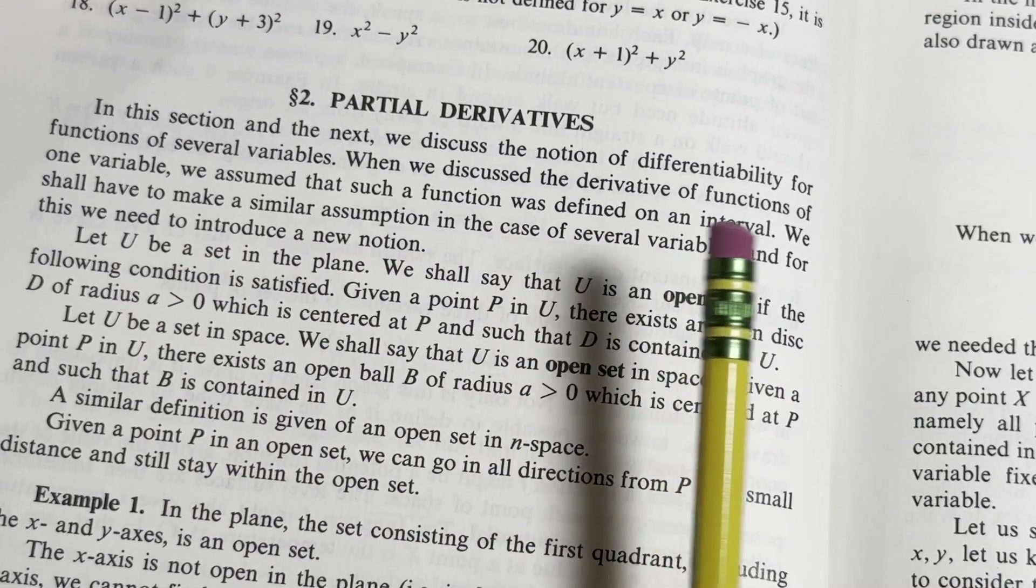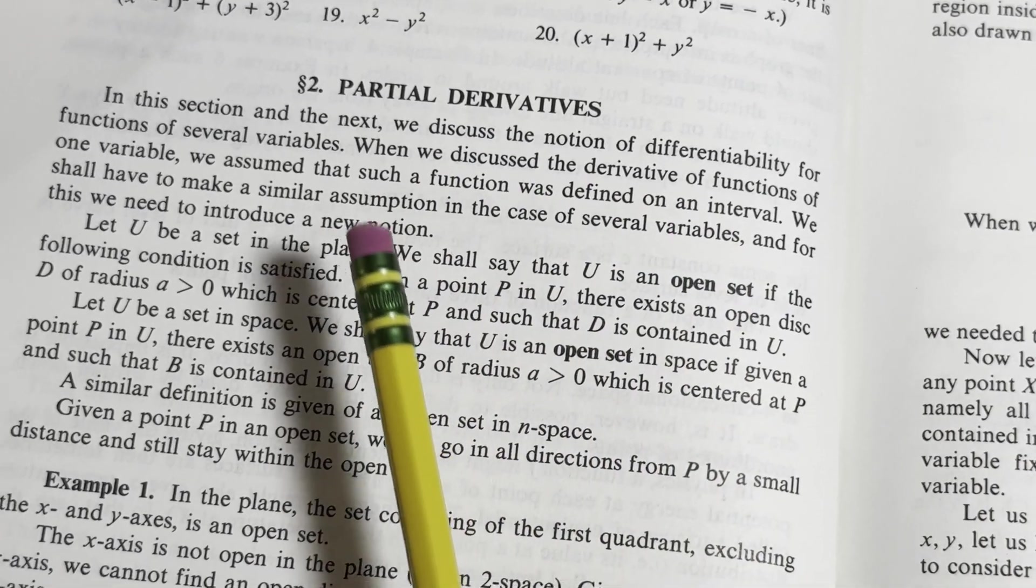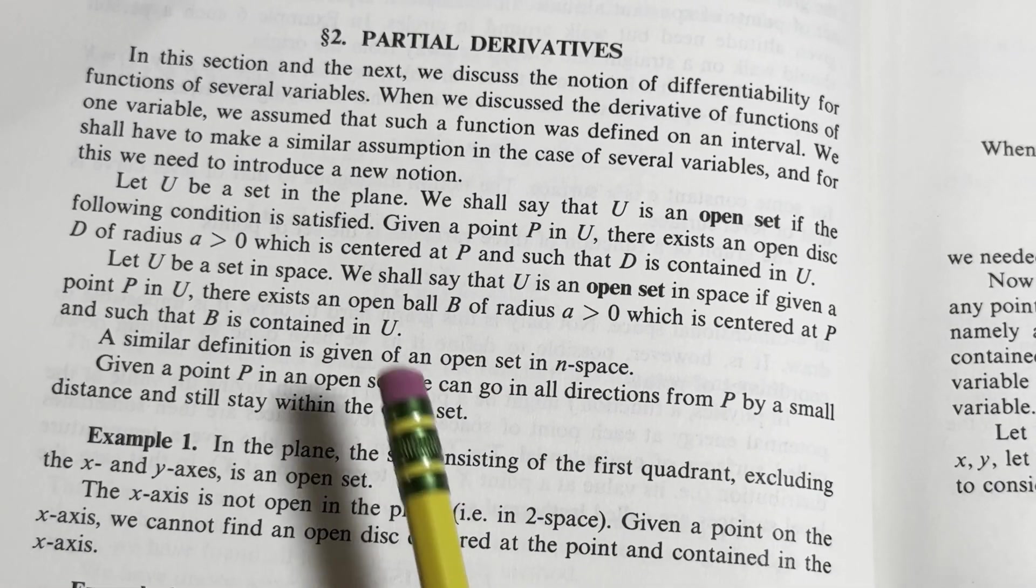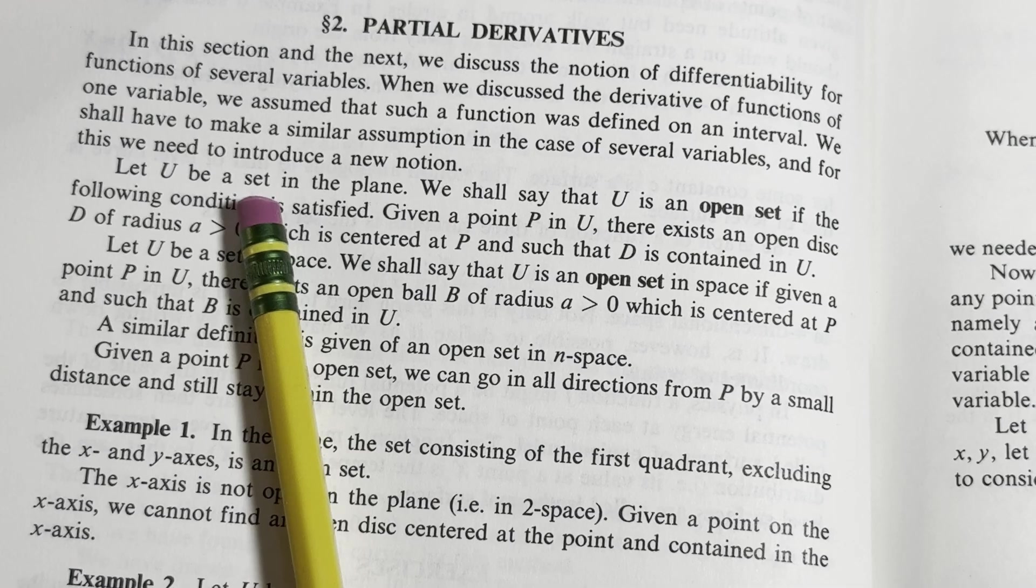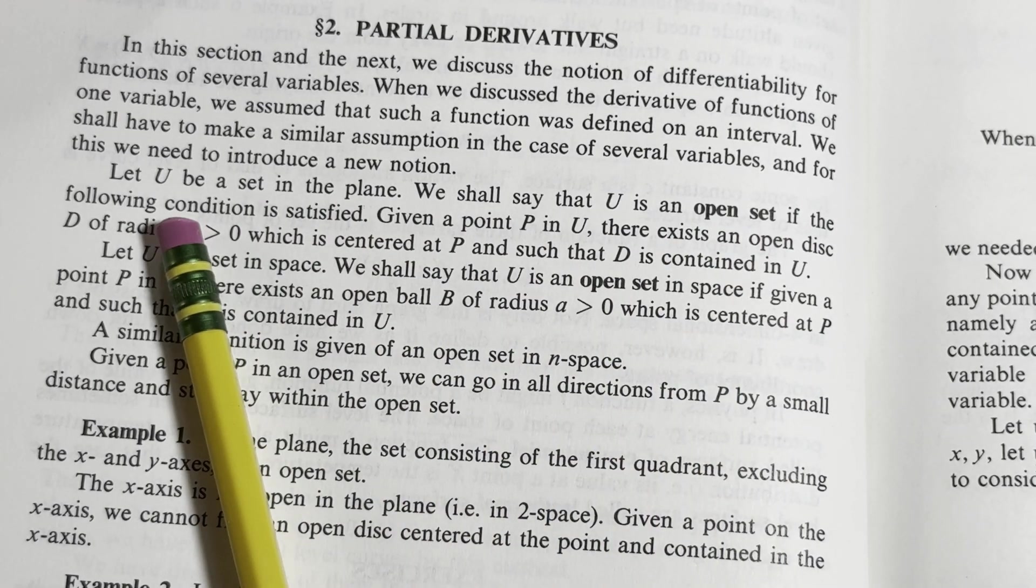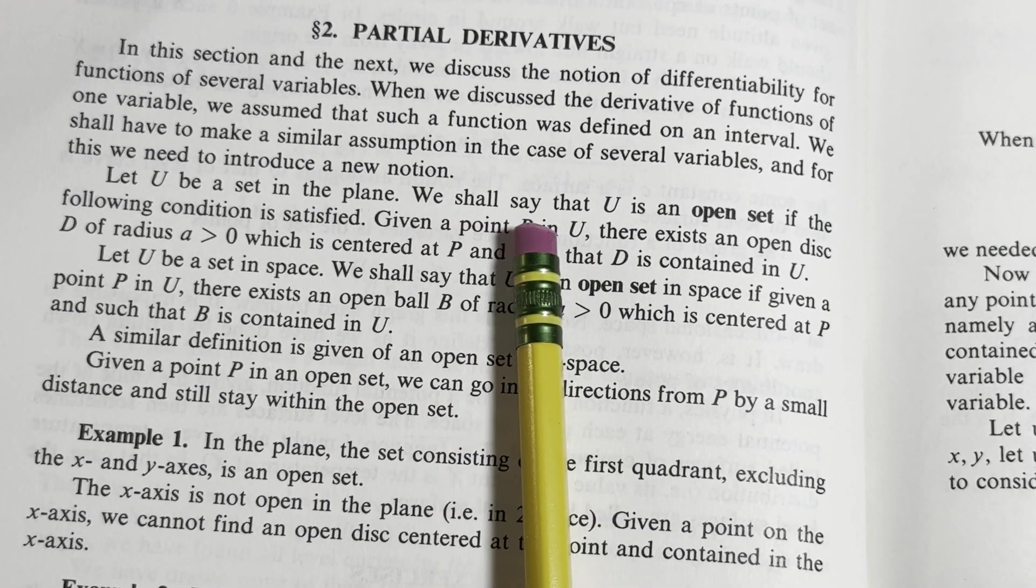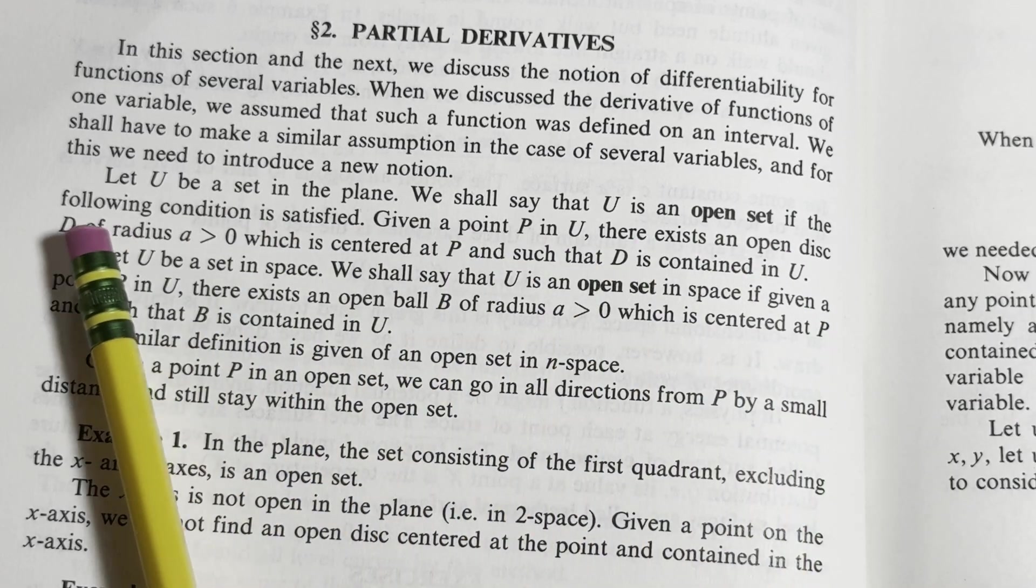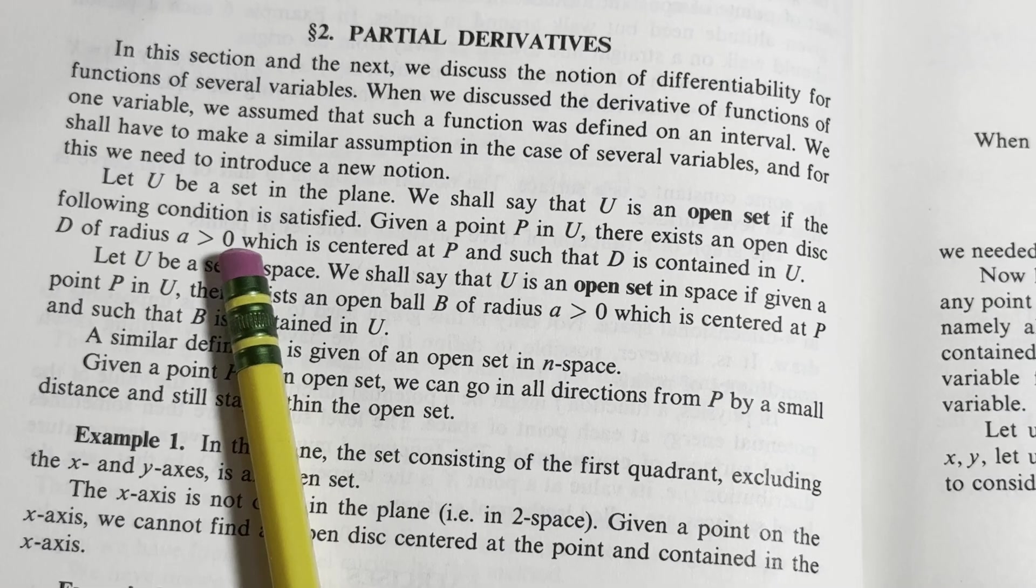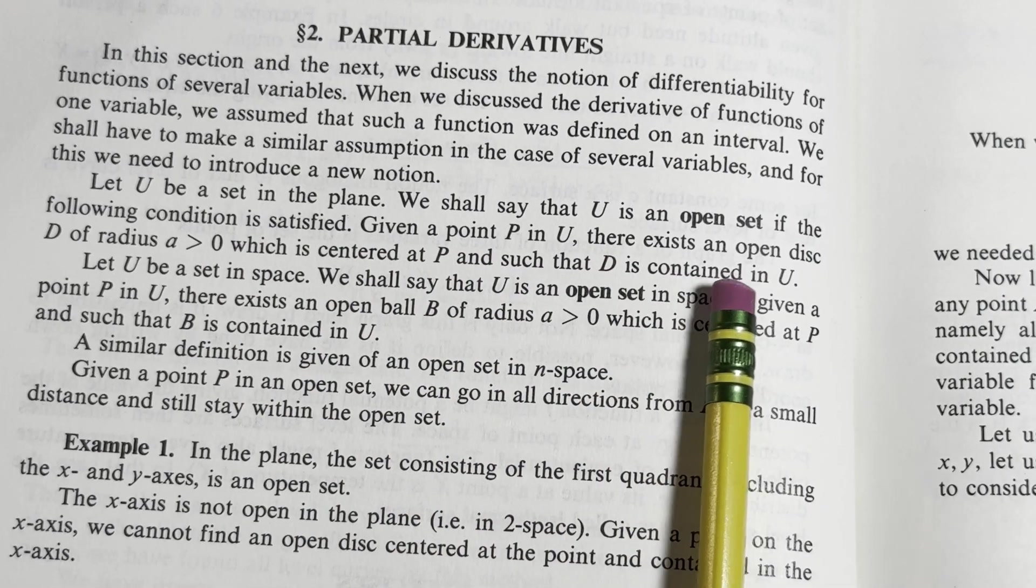Because in a single variable you define things on intervals that were open intervals. So what we're going to do now is define the notion of what we mean by an open set and then look at the example below. Let U be a set in the plane. We shall say that U is an open set if the following condition is satisfied. Given a point P in U, there exists an open disk of radius, well they're calling it D, of radius A greater than zero which is centered at P and such that D is contained in U.